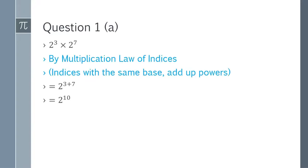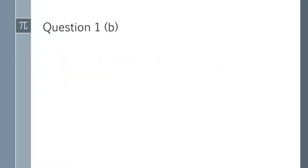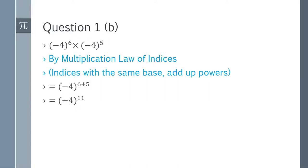Question 1a: 2 to the power of 3 multiplied by 2 to the power of 7. We will apply the multiplication law of indices, which states that we add the powers if the base is the same. So 2^3 × 2^7 = 2^(3+7) = 2^10. That is the answer.